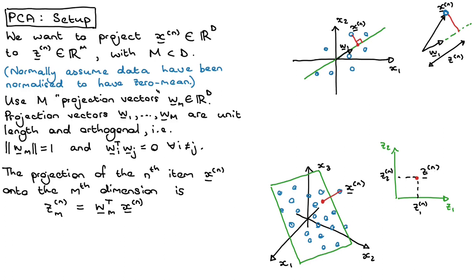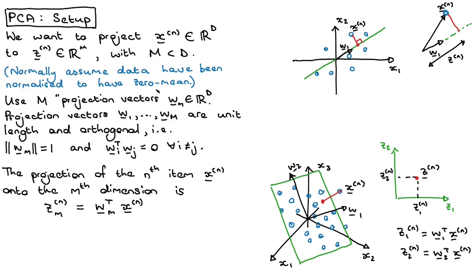The green plane here can be described with two vectors, W1 and W2. Those two projection vectors tell us where each of the data points will land on the plane. Specifically, Z1_N is given by the dot product between the first projection vector W1 and X_N, and Z2_N — the second dimension of the projection — is given by the dot product between W2 and X_N. This tells us exactly how to project all data points onto the lower dimensional space. These equations hold for the case where we're going from three to two dimensions.